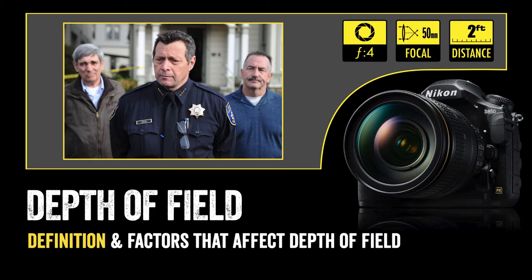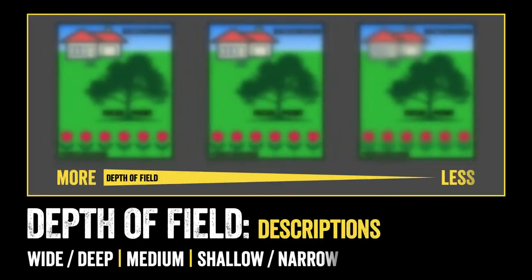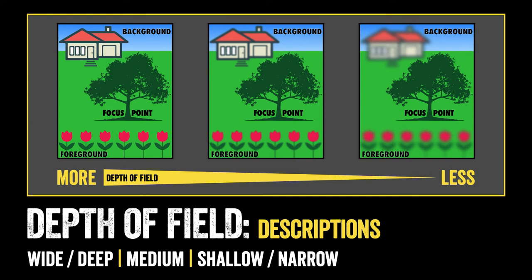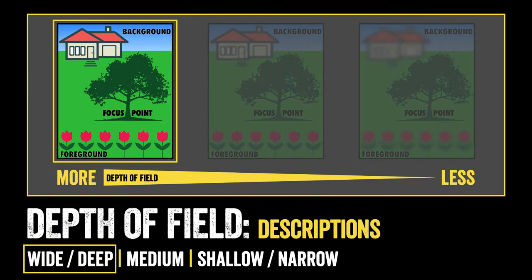Next we'll look at how we describe depth of field and how to talk about it when we're discussing photography. When we talk about depth of field in an image, we talk about it having more or less depth of field. We'll start with what we call a wide or deep depth of field. When an image has a wide depth of field, if there is a focal point in the center of the frame, a foreground and a background, almost all, if not all, of the image will be in acceptably sharp focus.